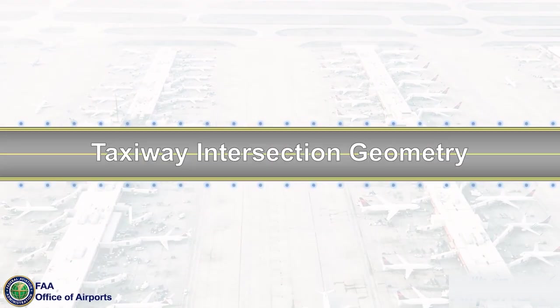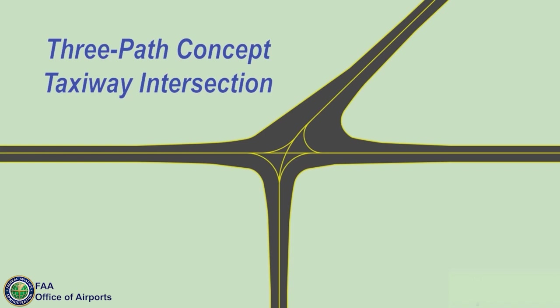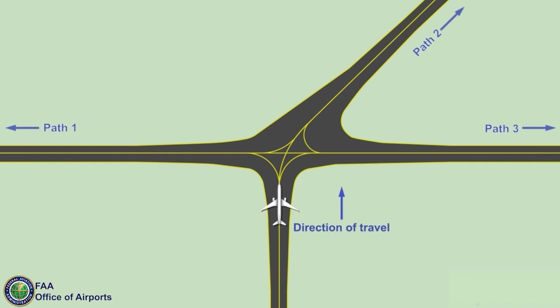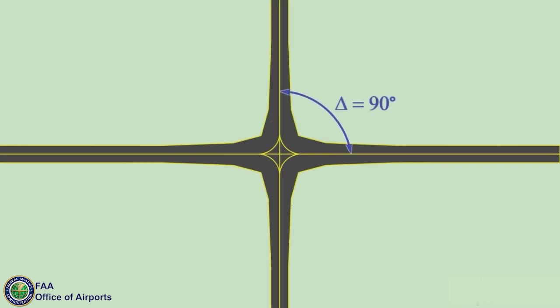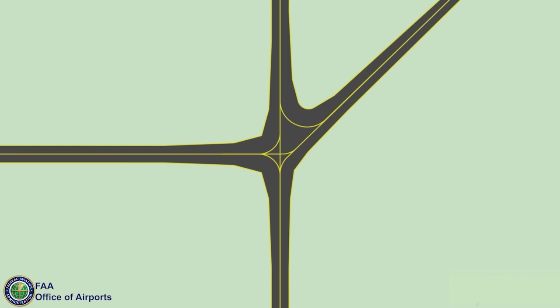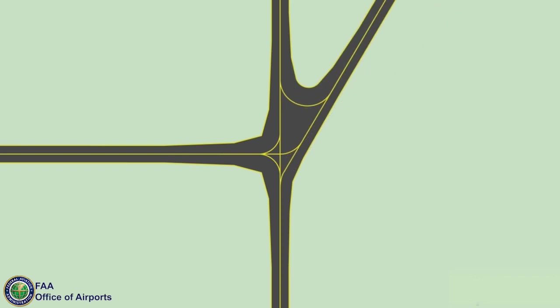When designing basic taxiway intersection geometry, standard practices limit the number of taxiways intersecting at a single location to allow for proper placement of airfield markings, signage, and lighting. The three-path concept, previously referred to as the three-node concept, means that a pilot does not have more than three choices at an intersection: left, right, and forward. Optimal intersections are 90-degree intersections that provide pilots with clear markings, signage, and sightlines to safely cross taxiways. Design of acute angle intersections should consider fillet requirements, the turn capabilities of the design aircraft, standard markings, lighting, signage, and the pilot's field of view.